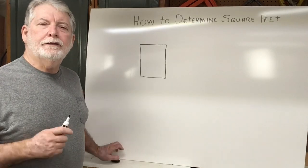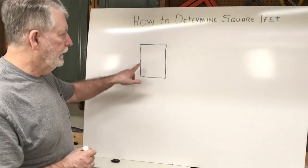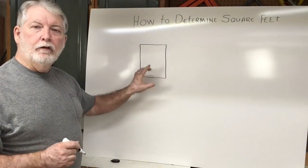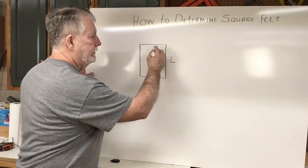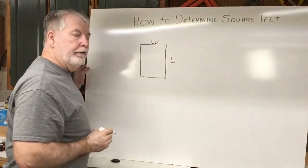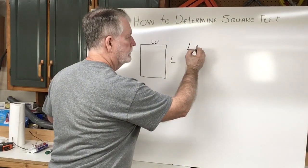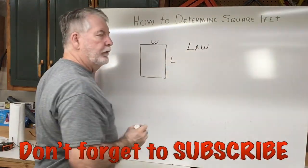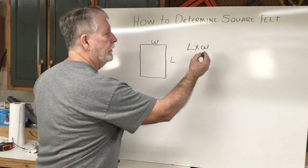Well the first thing, let's define how to determine the area of a rectangle. If you have a rectangle, or let's just say a room, you're going to measure the length and the width of that room. So you take the length times the width and that's going to equal the area.